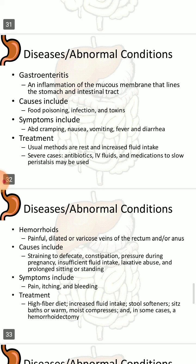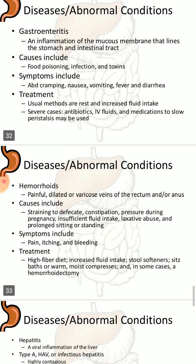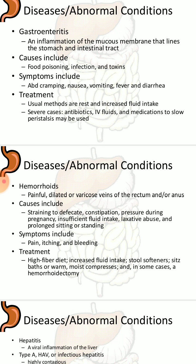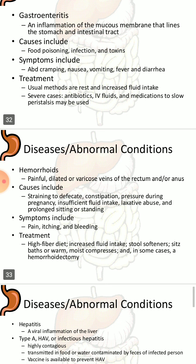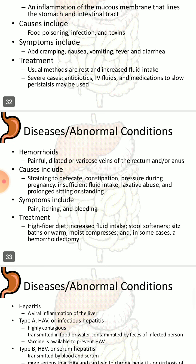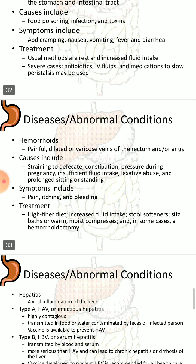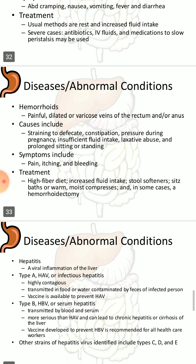Gastroenteritis is inflammation of the mucous membrane lining the stomach and intestinal tract. Causes may include food poisoning, infection, and toxins. Symptoms include abdominal cramping, nausea, vomiting, fever, and diarrhea. Treatment usually involves rest and increased fluid intake. In severe cases, antibiotics and medications to slow peristalsis may be used.